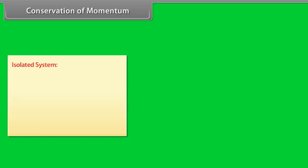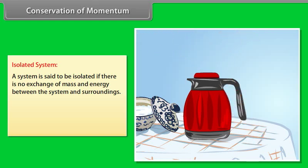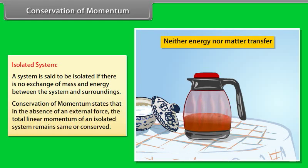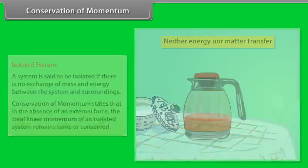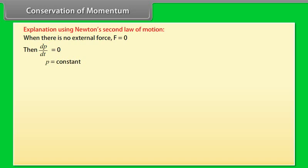Conservation of Momentum: A system is said to be isolated if there is no exchange of mass and energy between the system and surroundings. Conservation of momentum states that in the absence of an external force, the total linear momentum of an isolated system remains the same or is conserved. Using Newton's second law: when F = 0, dp/dt = 0, so p = constant, meaning mv = constant, and m1v1 = m2v2.